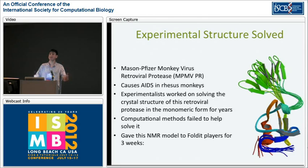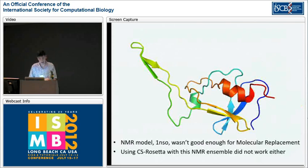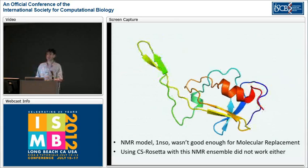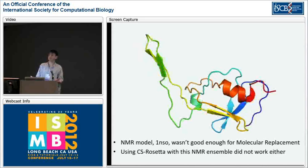They contacted David Baker's lab and asked if we could run Rosetta and computational methods on this — that had worked in the past for molecular replacement for certain proteins. We threw all our computational power at it. It didn't work. So we decided to give it to the Foldit players. There's an NMR structure for this protein, but there's a lot of variation in the NMR model, and even the NMR structure wasn't good enough to solve it with molecular replacement. We also tried using CS Rosetta, which uses chemical shift information from the NMR structure. That didn't work either. So we gave it to the Foldit players for three weeks over winter break.